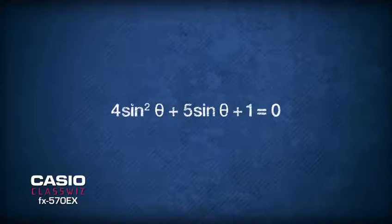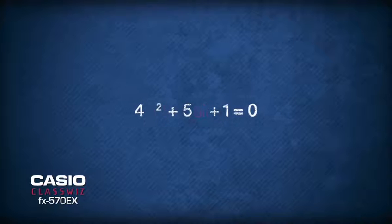Notice that this is a quadratic equation with trigonometry as variables. If you can't see it, imagine sinθ as a single parameter x. We then have a clear quadratic equation of 4x² + 5x + 1 = 0.